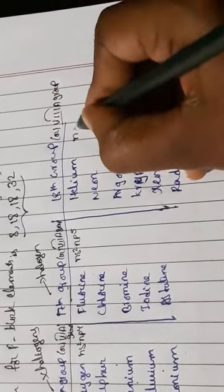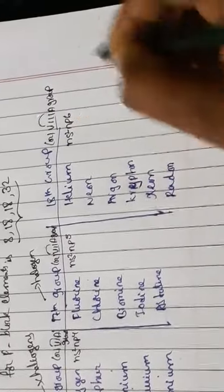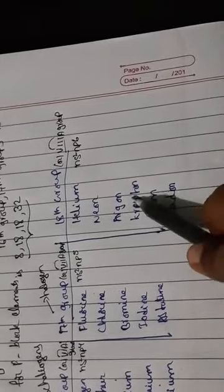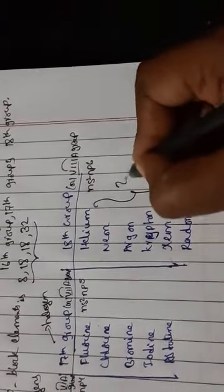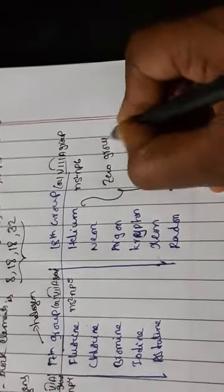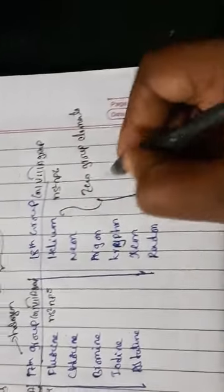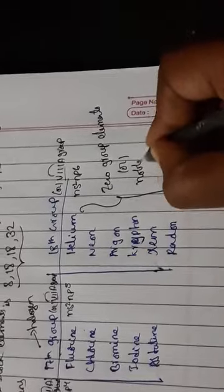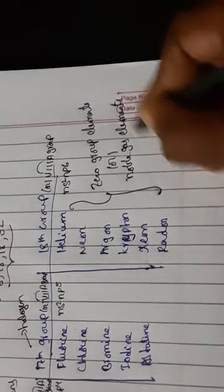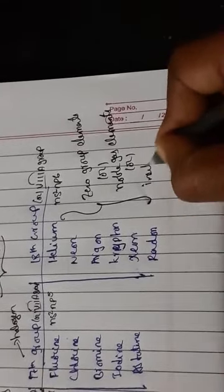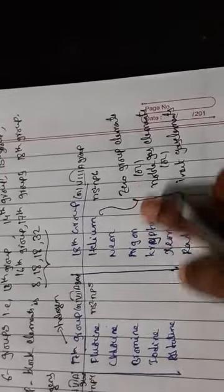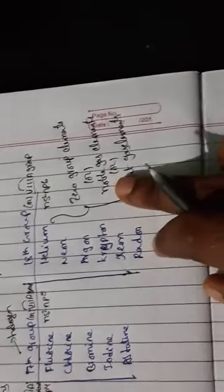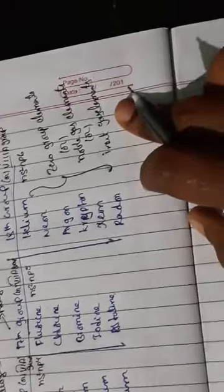The 18th group, or 8A group elements, has complete octet configuration ns² np⁶. The elements are helium, neon, argon, krypton, xenon, and radon. These elements are known as zero group elements, noble gases, or inert gas elements — called zero group because they have a complete configuration.